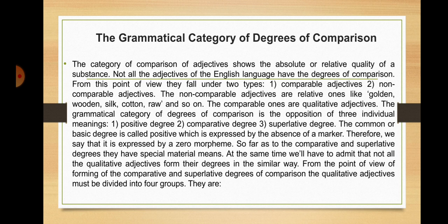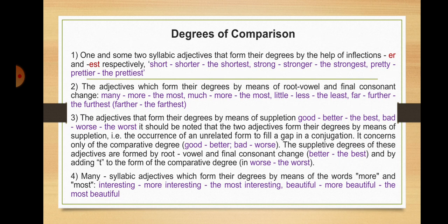Not all qualitative adjectives form their degrees in the same way. From the point of view of forming comparative and superlative degrees, qualitative adjectives are divided into four groups. The first group: one- and some two-syllable adjectives that form their degrees by the inflections -er and -est respectively — for instance, 'short/shorter/the shortest', 'strong/stronger/the strongest', 'pretty/prettier/the prettiest'.